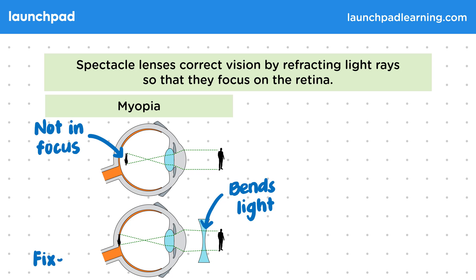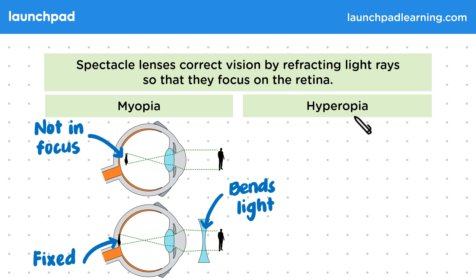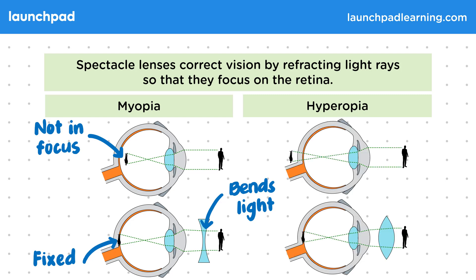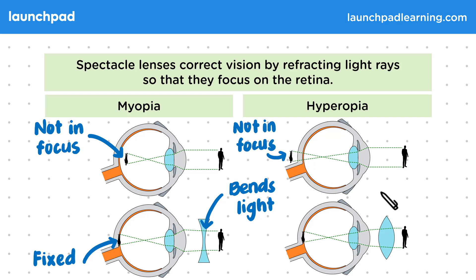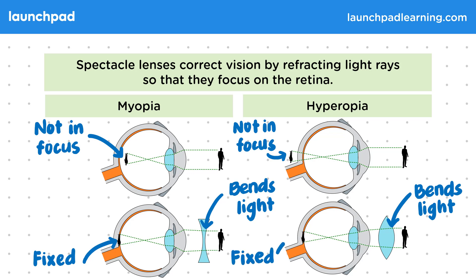The image now focuses on the retina and the vision is fixed. Spectacle lenses can also fix hyperopia — remember, this is long-sightedness. This top image shows what happens with hyperopia: the image is produced too far back, behind the retina, so it's not in focus. The spectacle lens bends the light by refracting it slightly inwards, which focuses the image on the retina and therefore the vision is fixed.